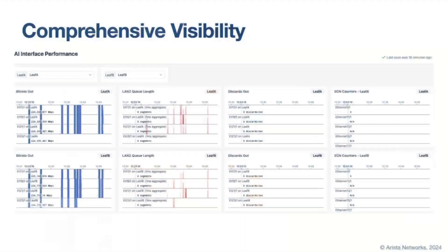What we're striving to do is give you comprehensive visibility from end to end across all of the places that can impact the performance of your network. We've taken all of these AI NIC counters and added them to all of the telemetry EOS already supports — traditional counters, queuing statistics, discards, ECN counters, PFC counters. Being able to correlate all of these network counters with statistics from the actual servers themselves really enables engineers to more accurately and quickly debug their networks.